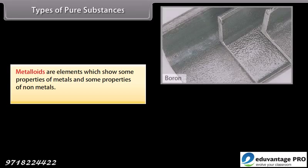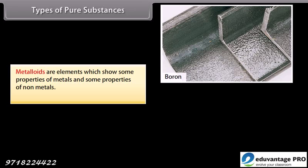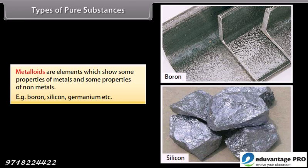Metalloids are elements which show some properties of metal and some properties of non-metals, like boron, silicon, germanium, etc.